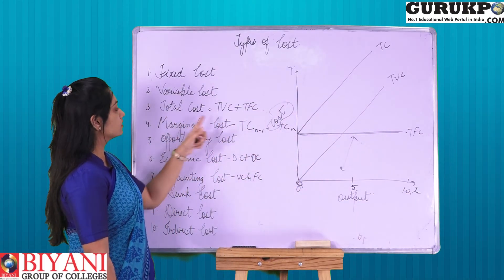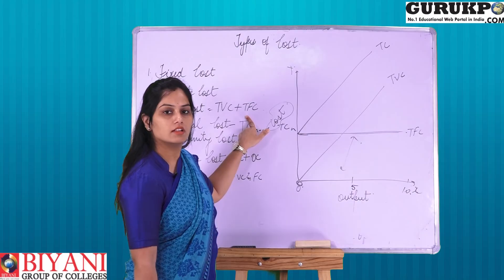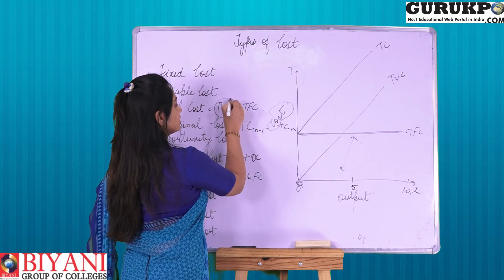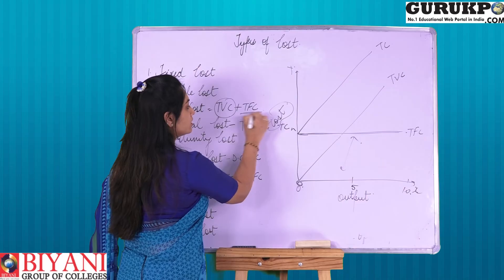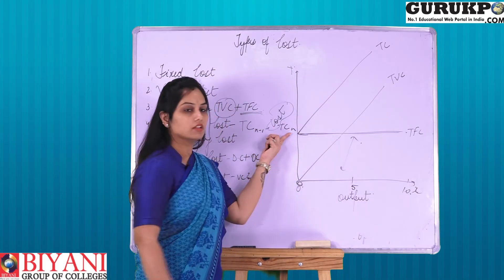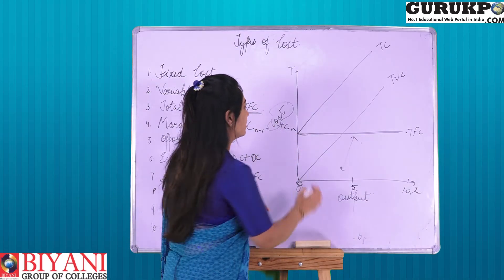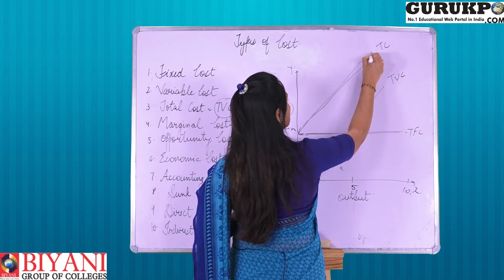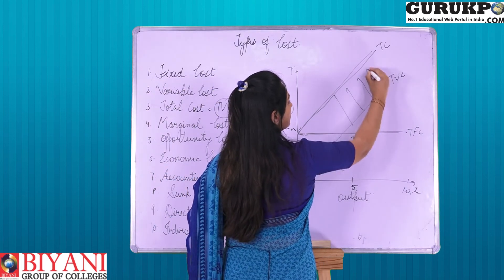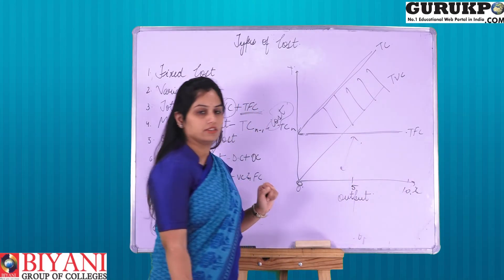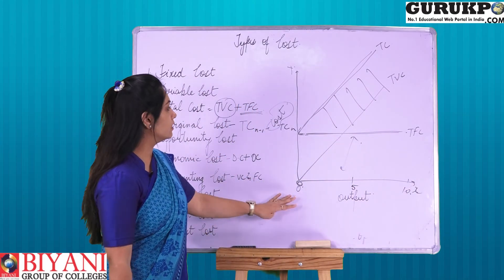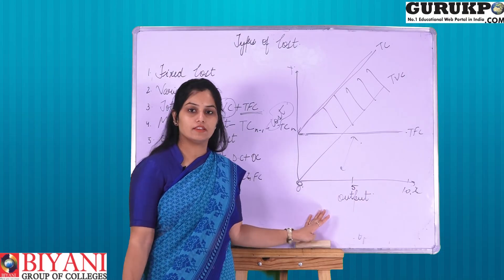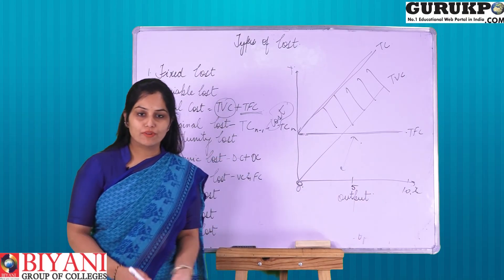Total cost equals TVC plus TFC. TVC starts from zero, but TFC starts from above zero — that is why TC starts from above zero. The difference between TC and TVC will always be equal to TFC. This is the relationship between TC, TFC, and TVC. Thank you very much.